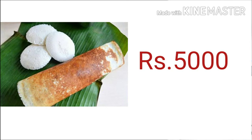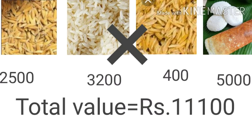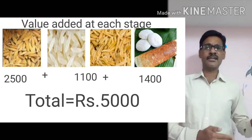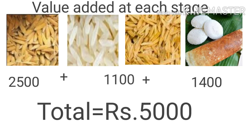So how can we calculate the GDP here? Shall we add the first stage value of 2,500, the second stage value of 3,600, and the final stage value of 5,000? No, it is not right. If we add these three stage values it will become inflated because the goods only changed their position — paddy changed into rice and rice changed into idli and dosa.